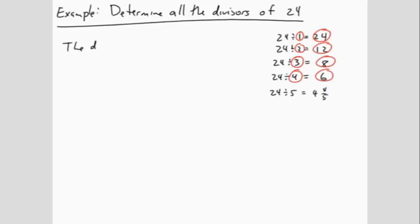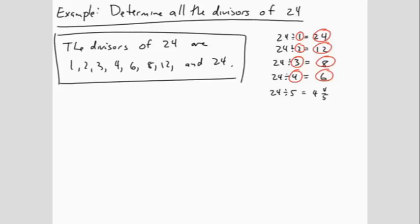The divisors of 24 are 1, 2, 3, 4, 6, 8, 12, and 24.